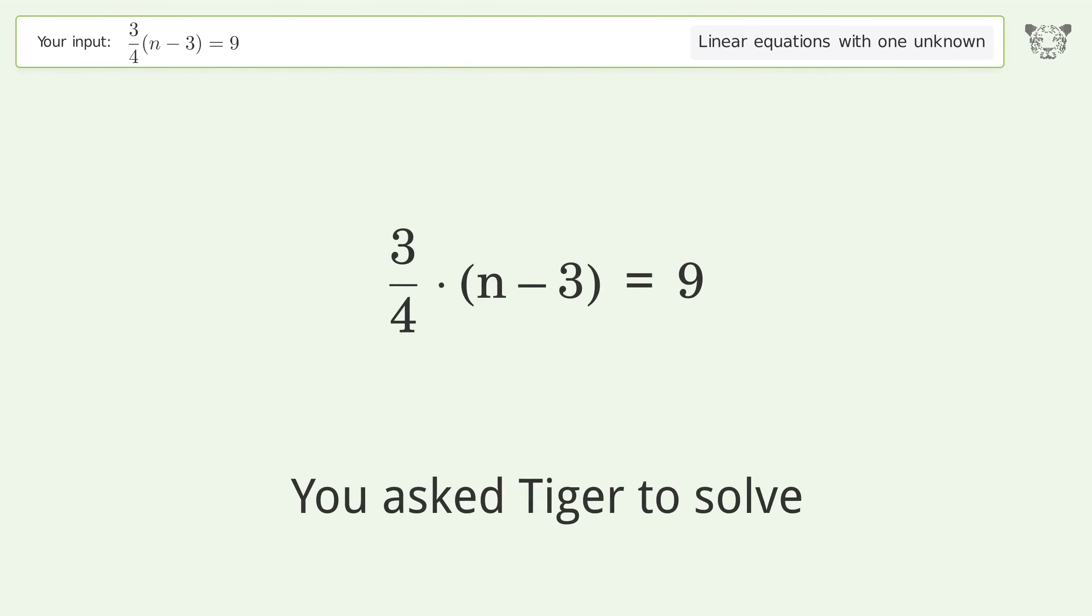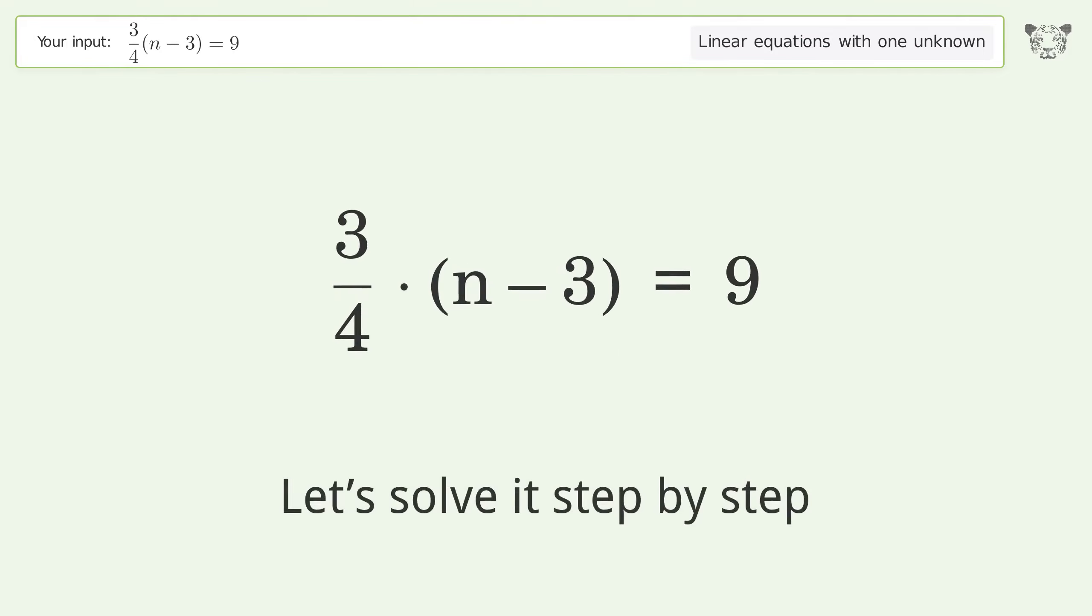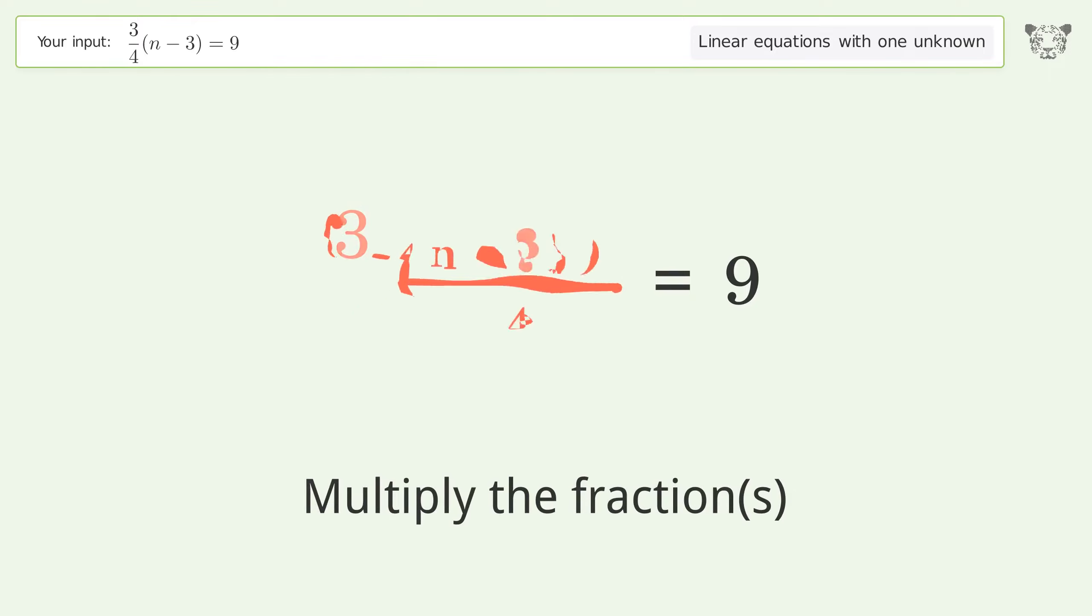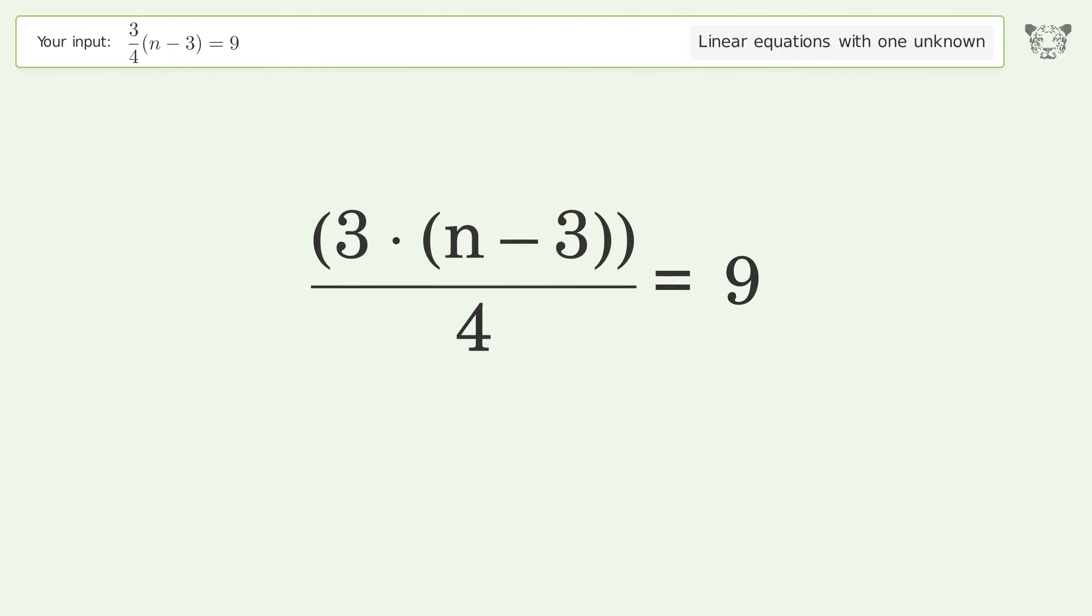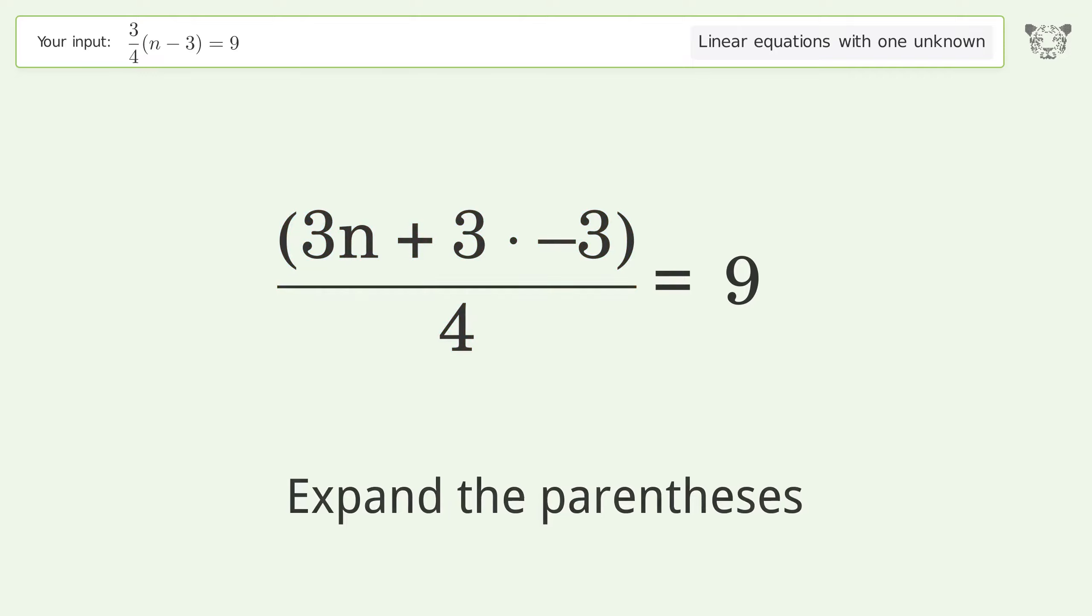You asked Tiger to solve this problem dealing with linear equations with one unknown. The final result is n equals 15. Let's solve it step by step: simplify the expression, multiply the fractions, expand the parentheses, and simplify the arithmetic.